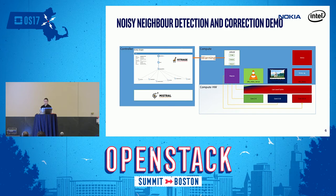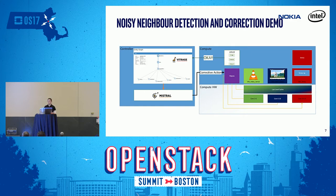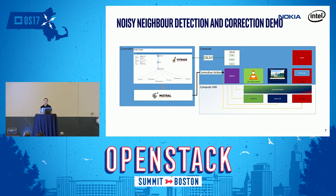Under the stress scenario, a notification will be generated from CollectD to Vitrage. Vitrage will also notify Mistral once it's done its RCA — it's going to notify Mistral of an alarm on that VM. Mistral is going to trigger the corrective action, which takes advantage of the user space library available on the compute node. Intel RDT uses the concept of class of service, which can be used to isolate applications you're interested in and prioritize their last level cache utilization from other applications running on the same processor. We're going to reassign a higher class of service for the two VMs we're interested in, and we'll see normal video operation resume and the alarm get cleared on the Vitrage side.